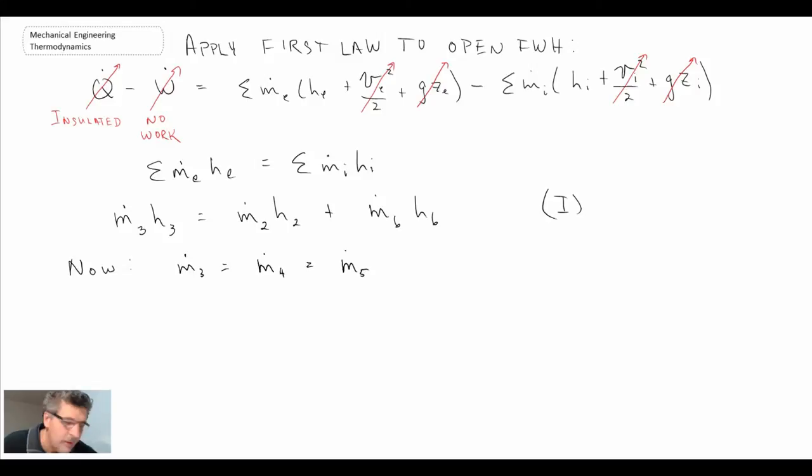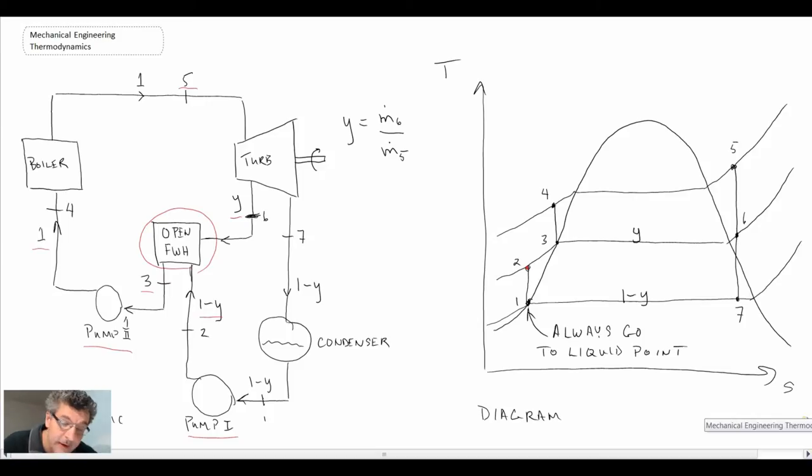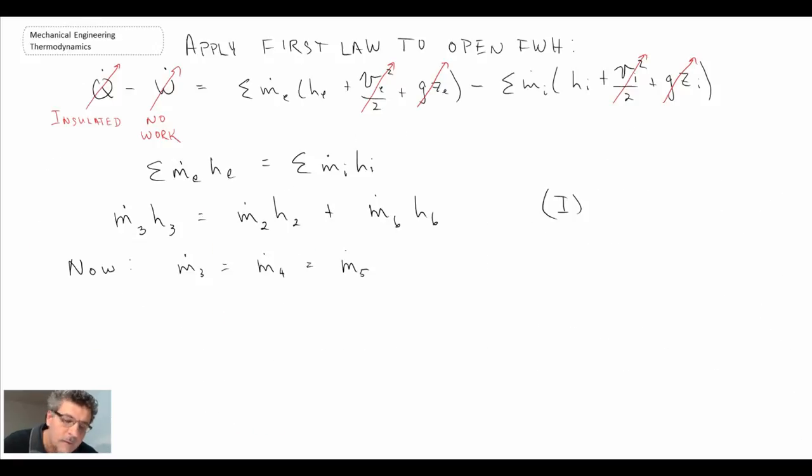And in a similar way, we can make comments about the mass flow rate at 7, 1, and 2. So at 7, the flow rate at 7, 1, and 2. That should be a 1 down here. It's kind of hard to see it. So basically, we can write that mass flow rate at 7 equals mass flow rate at 1 equals mass flow rate at 2.